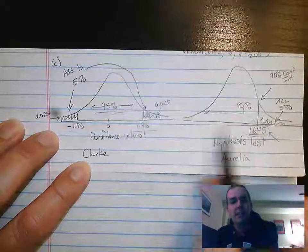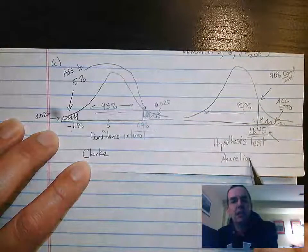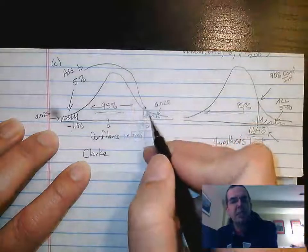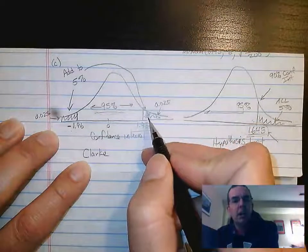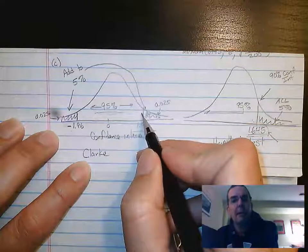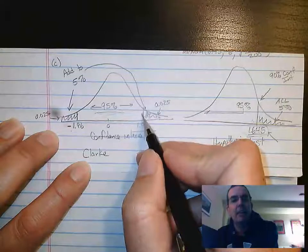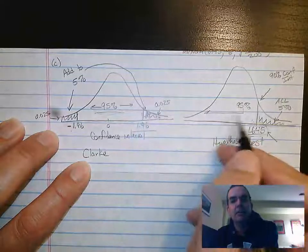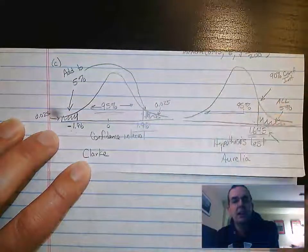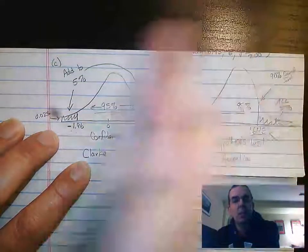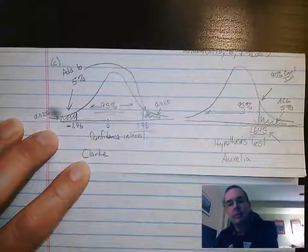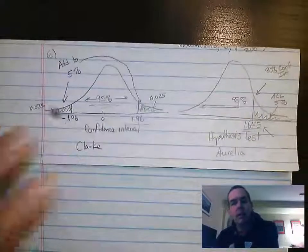That's the reason why Clark and Aurelia came to different decisions. Clark's observed value was probably right around the borderline. But when we move to Aurelia's test, the critical value line slides to the left, and what was not significant for Clark became significant for Aurelia.